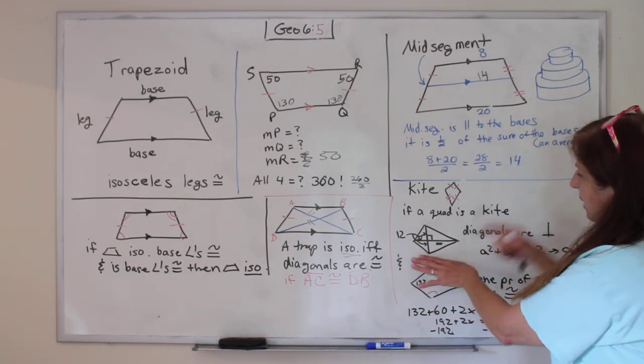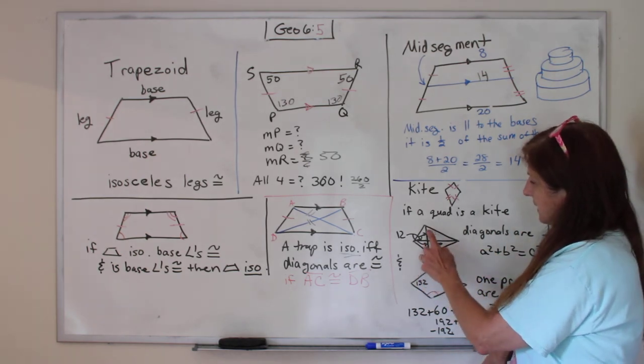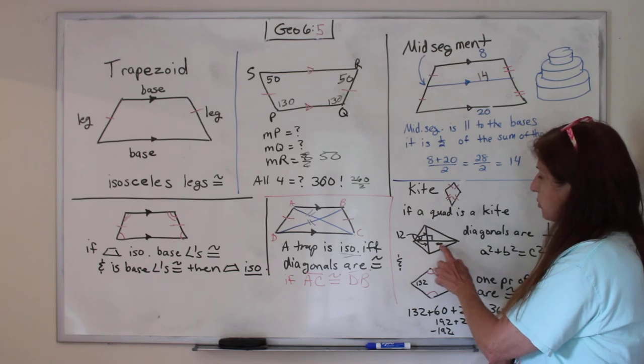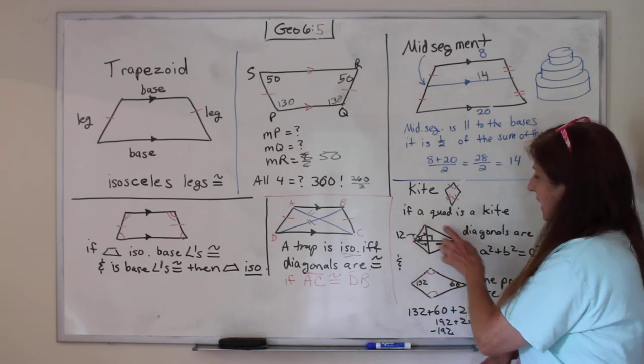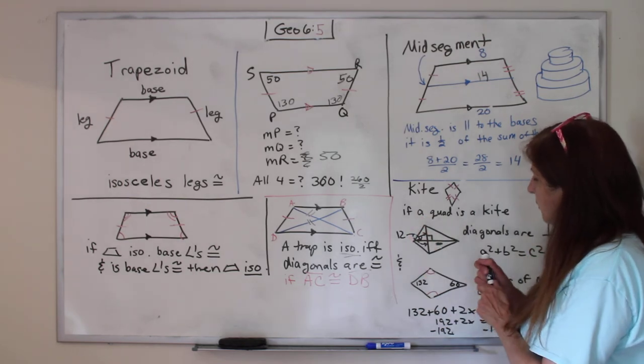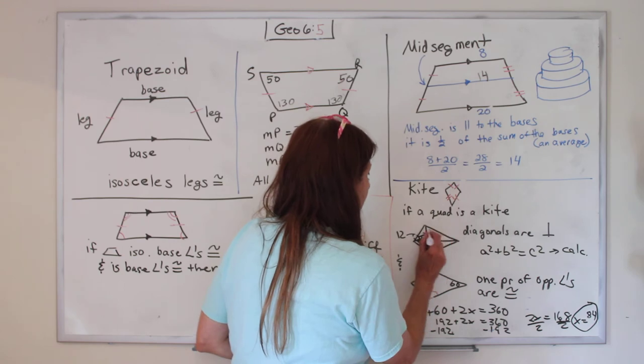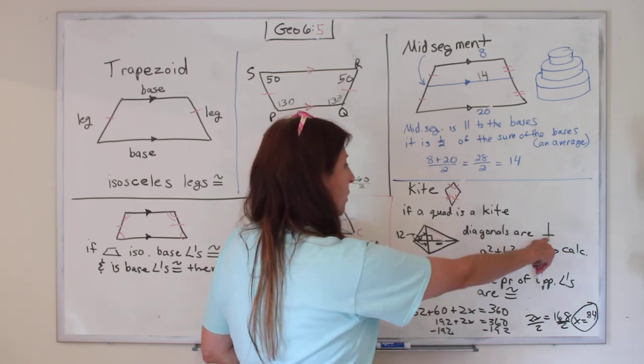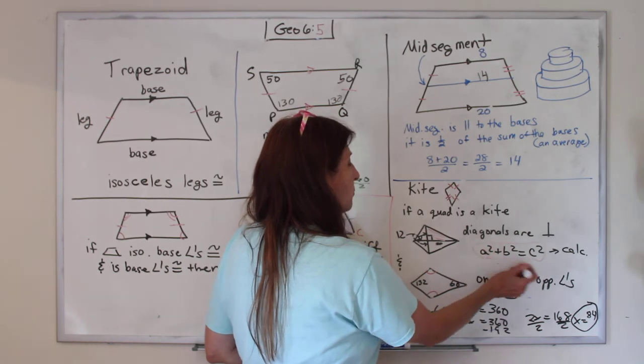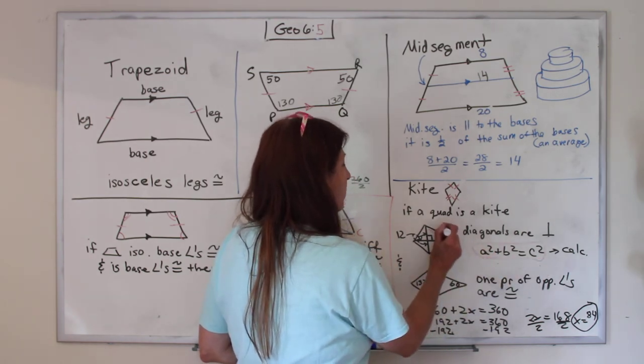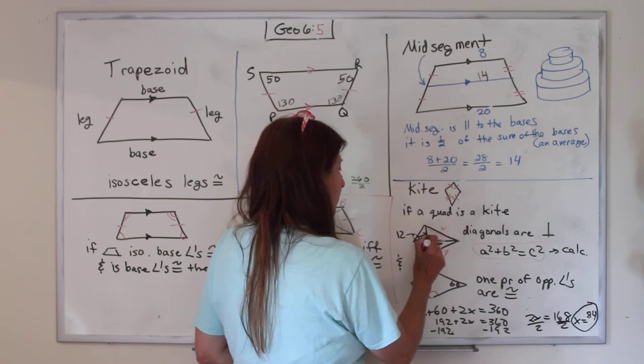And you can have a problem with this. Like in the book, it's got where it says that this side, this side, and this side are all 12, and that one's 20. And they wanted you to find the length of the outside sides. Well, if you look at it, each one of these is a right triangle because they are perpendicular. So you can use Pythagorean Theorem, A squared plus B squared is C squared. And you can solve for these missing sides. Do you see how they're each right triangles?